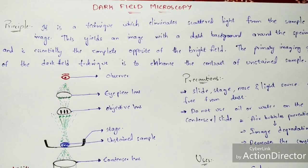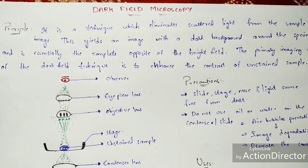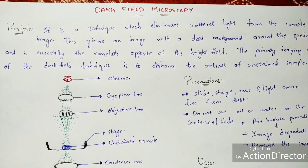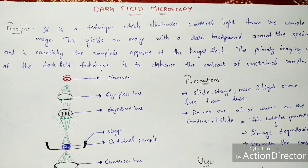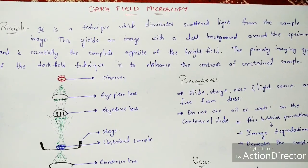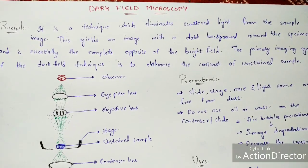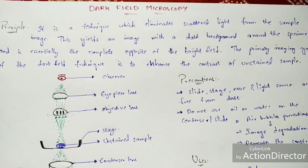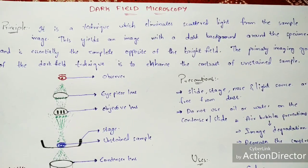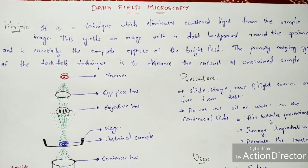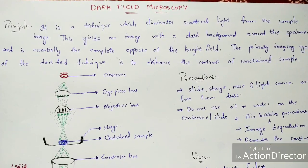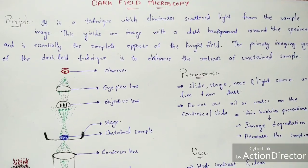In this video let us discuss about dark field microscopy. The principle: it is a technique which eliminates scattered light from the sample image. This yields an image with a dark background around the specimen, and it is essentially the complete opposite of bright field microscopy.